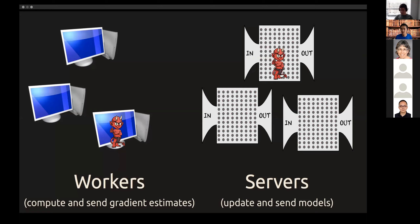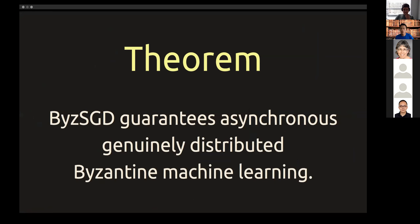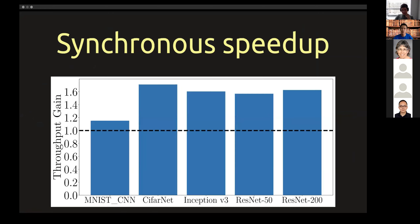We tried to design algorithms that are Byzantine fault tolerant for any component of the system. Using classical distributed computing tools like state machine replication would be extremely costly for the large models involved and wouldn't work for asynchronous networks. Instead, we designed a tailored solution that addresses model drift — which occurs when different servers receive different gradients from Byzantine workers. Our algorithm, BizSGD, guarantees asynchronous, genuinely distributed Byzantine machine learning, and in the synchronous case we found a way to gain over 50% performance improvement.